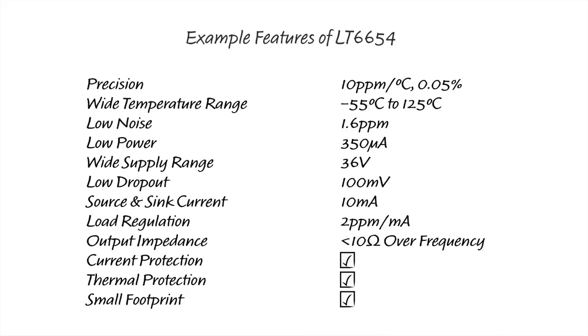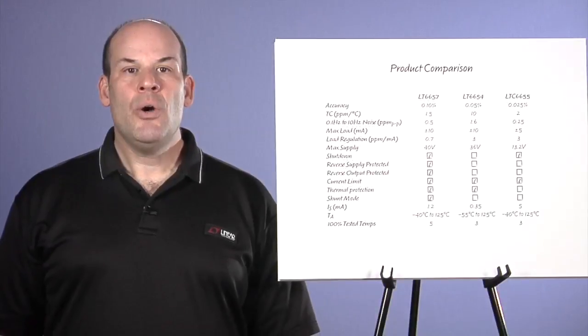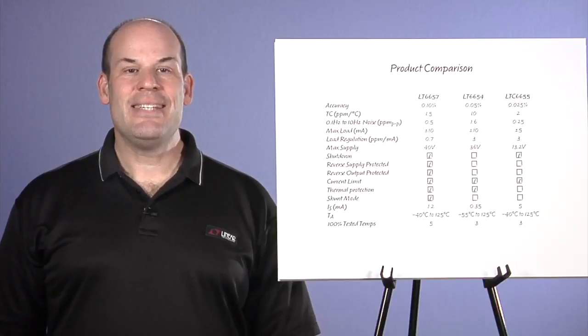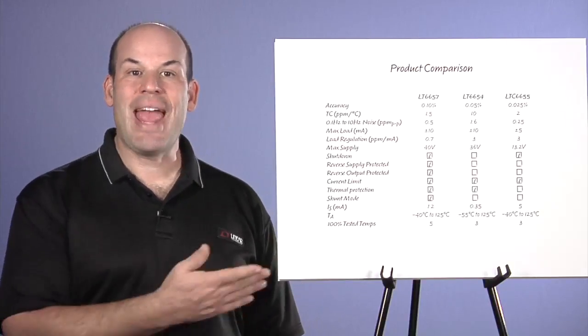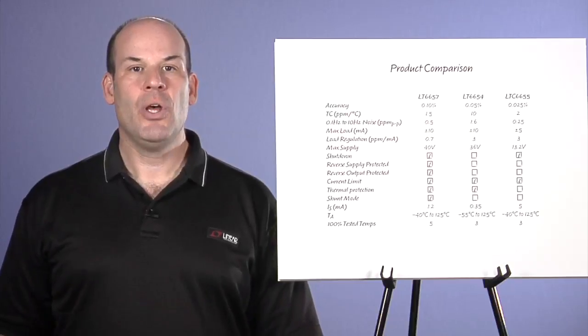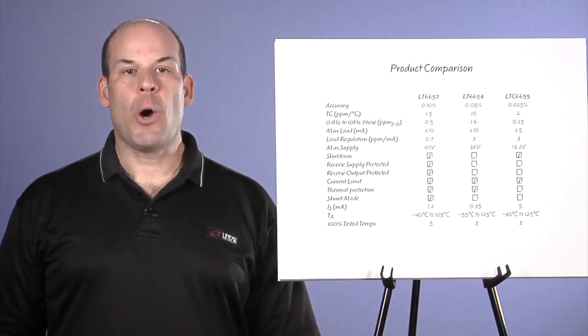These features allow for use in low or high voltage systems with the ability to bias sensors or signal conditioning circuitry, all while holding a precision output voltage. From the comparison chart, it is easy to see that LT6657 has performance that rivals any available voltage reference with a feature list that is comprehensive.